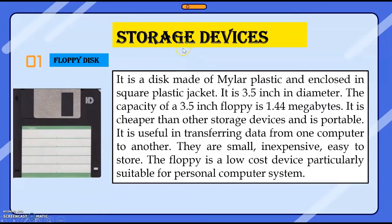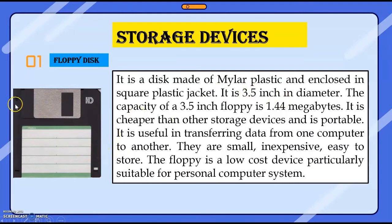The first storage device we are going to learn is the floppy disk. This floppy disk is also an example of computer hardware. A floppy disk is a disk made of mylar plastic and enclosed in a square plastic jacket. You can see the square plastic jacket — inside there is a mylar plastic disk, disk-shaped, and inside that data is stored.